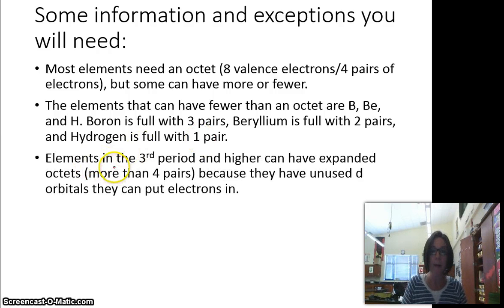Then there are some elements that can have what we call expanded octets, and that means it can have more than eight electrons, more than four pairs. Elements that are in the third period on the periodic table and higher can have those expanded octets. The reason why is because that third period represents the third energy level, and the third energy level has D sub-level on it. Even though they're not using those D orbitals, they can put electrons into those D sub-levels, and that's why we say they can expand their octet.